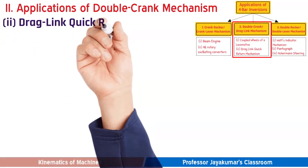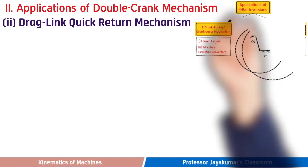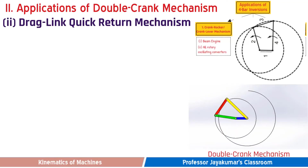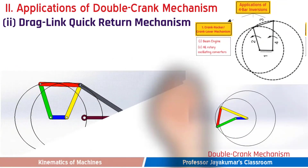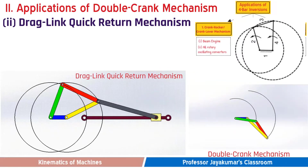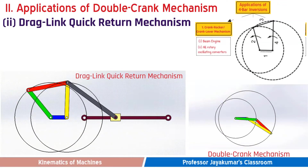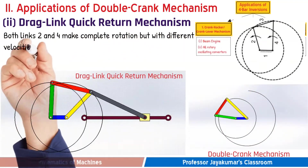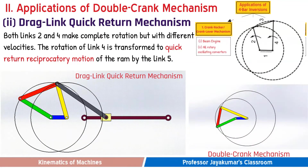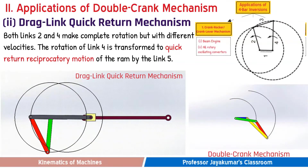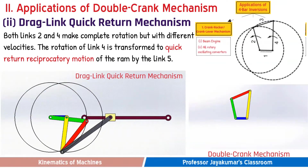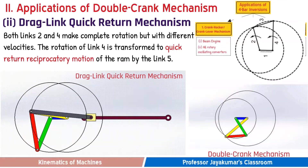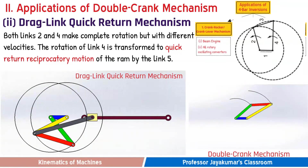Now let us see the second application of double crank mechanism. This is also a 4-bar mechanism with a double crank in which the shortest link is fixed. As you can see from this animation, if the green-colored input link rotates at a uniform speed, the yellow-colored output link rotates at non-uniform speed. This rotation of the output link is transformed to a quick return reciprocatory motion of the RAM by link 5. The time taken for the return stroke is lesser than that for the forward cutting stroke, and hence this drag-link mechanism is also known as a quick return mechanism.